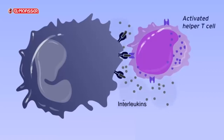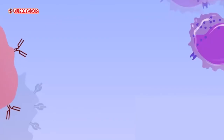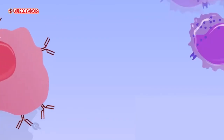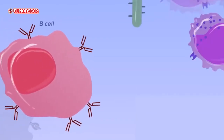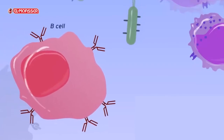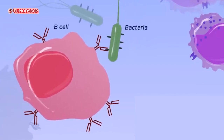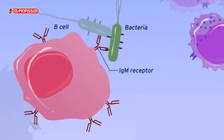The helper T cells recognize the displayed antigen-MHC complex on the macrophage surface and bind with it through the CD4 receptor present on the surface of helper T cells. The macrophages then secrete a protein substance called interleukins to activate the helper T cells, making them activated helper T cells.